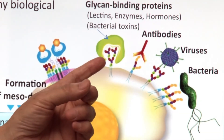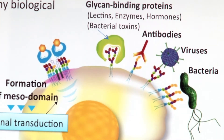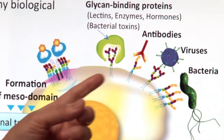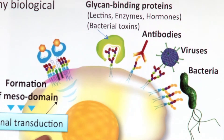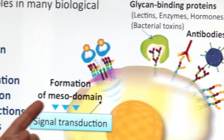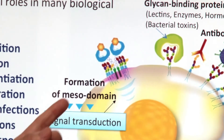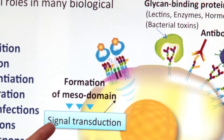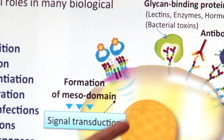Also, bacterial toxins such as cholera toxin, tetanus toxin, and botulinum toxin can bind the sialoglycans to invade the cells. Formation of microdomains is very important for signal transduction, which is a crucial process for cell life.